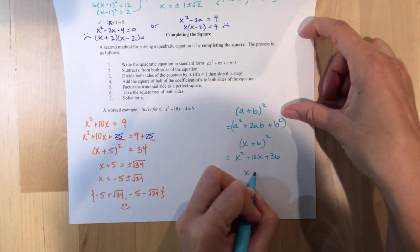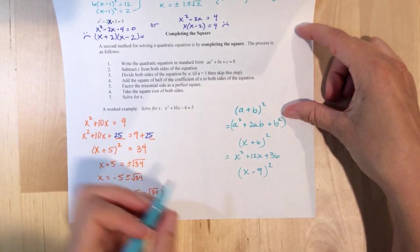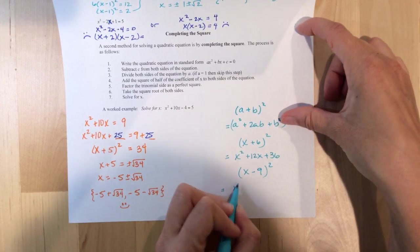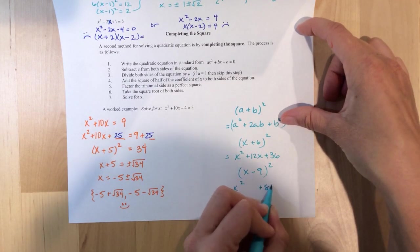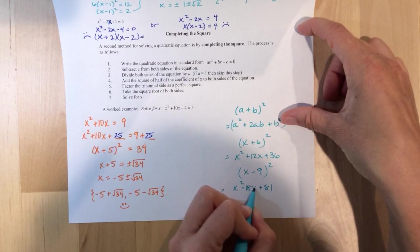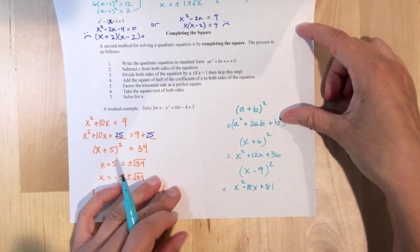So, if I gave you x minus 9 squared, pause the video and try it. You get x squared plus 81 minus 18x. Cool.